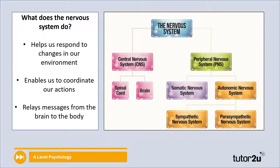Instead of just trying to remember the terms, understanding the purpose of the nervous system will go a long way in helping you talk about it fluently. So what does it do? Well, it helps us respond to changes in our environment, whether in response to stresses, weather, or anything at all. It also enables us to coordinate our actions, movements, and behaviours, and it relays messages from the brain to the body. As you can see on the diagram on screen, all the different subcomponents, though very separate, still communicate together very much so.